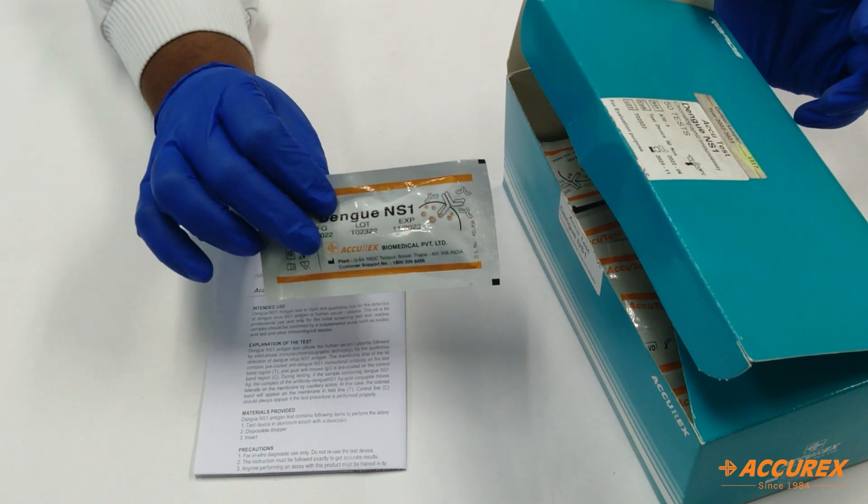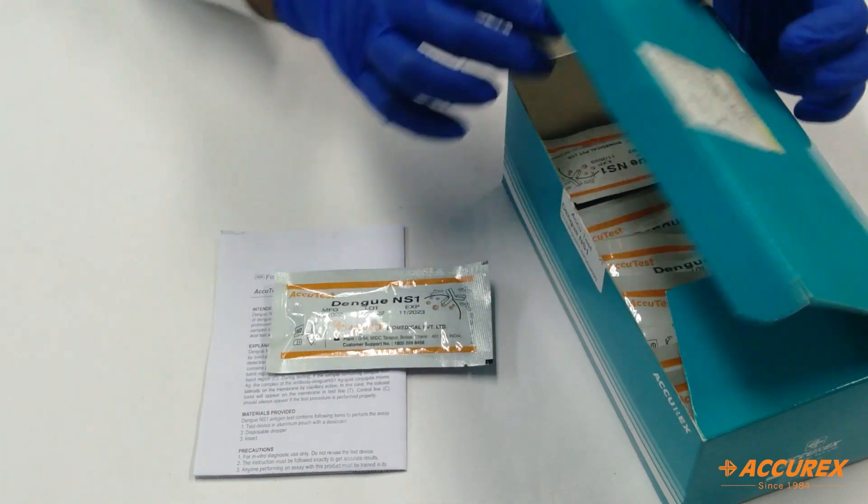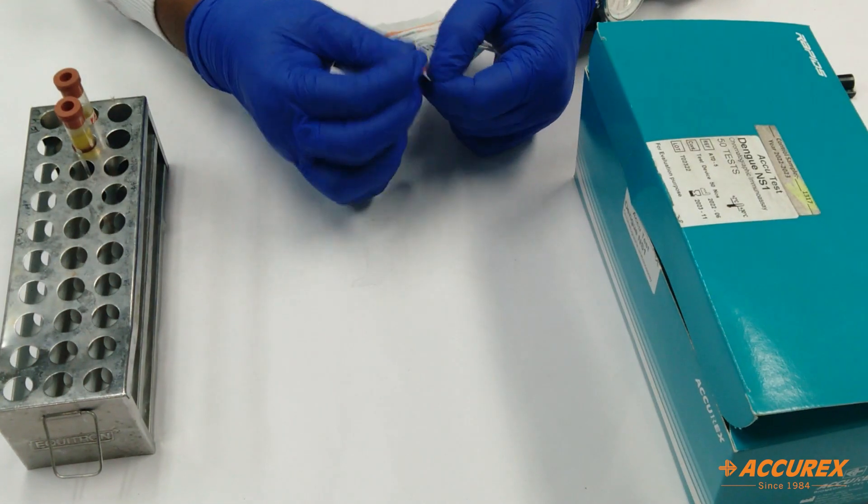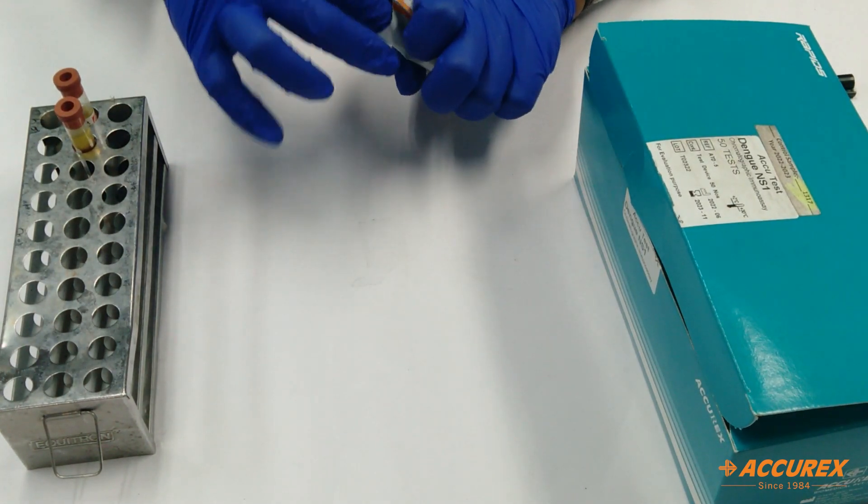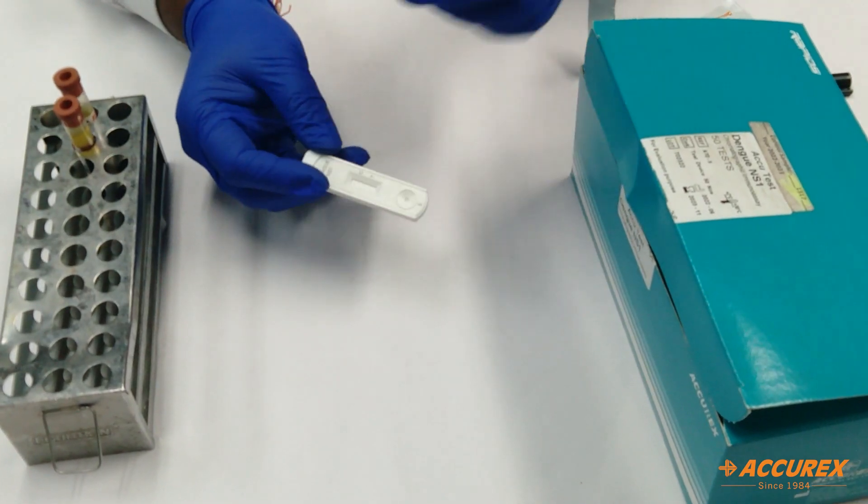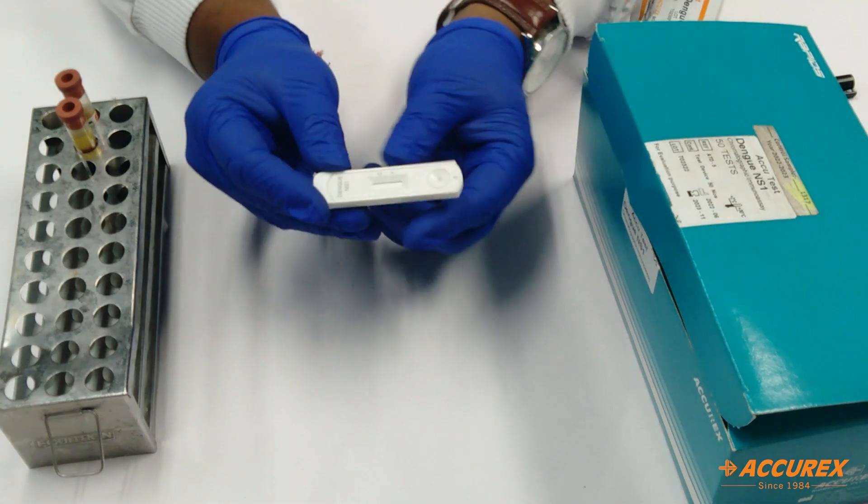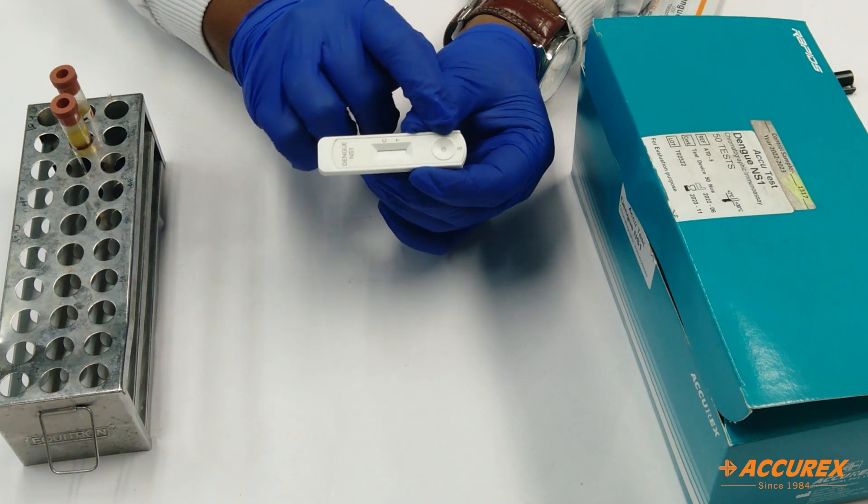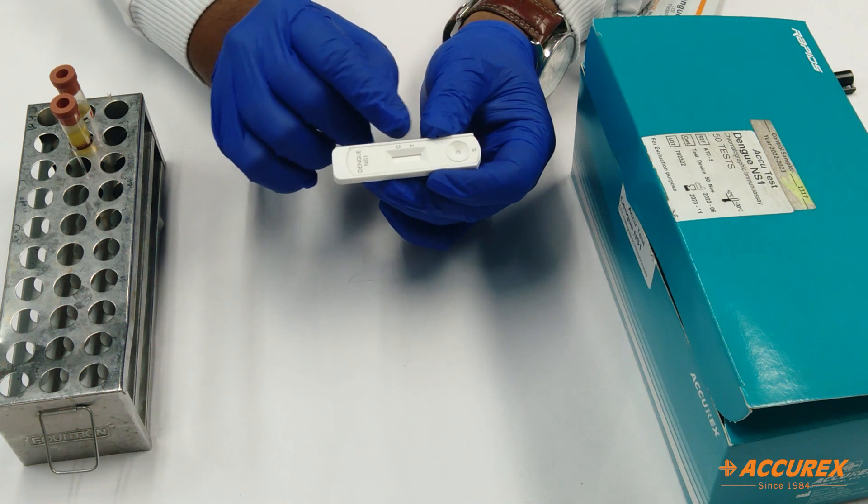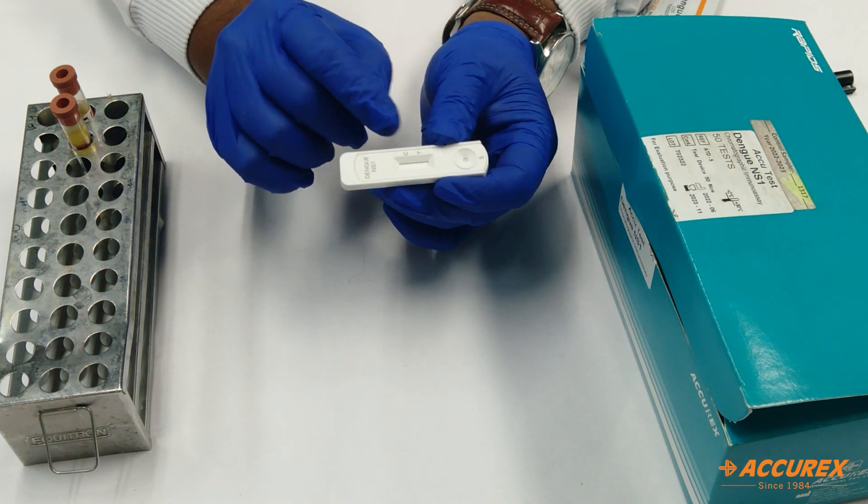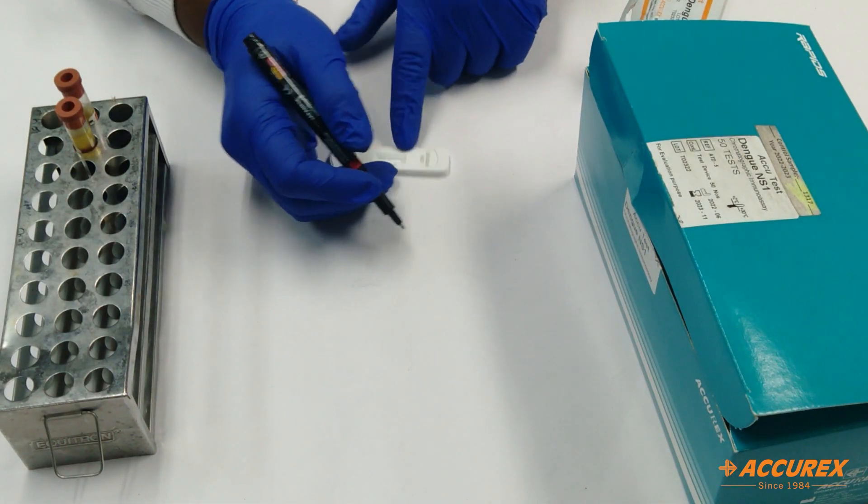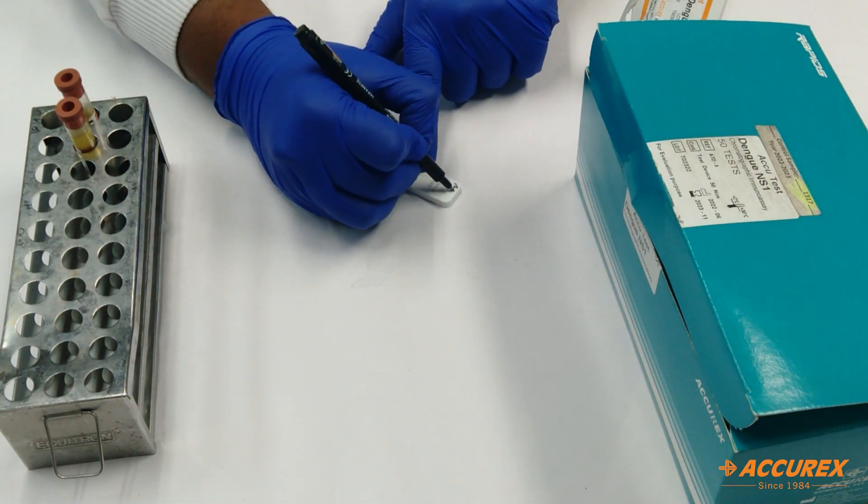Now we'll proceed to the testing part. Inside the pouch, you will find the test card and one dropper. On the test card, you will see the sample well where you need to put the sample. You can also find the lines showing control and test. Before processing, you need to mention the patient name on the card and the date.